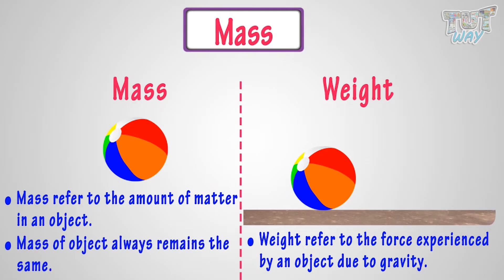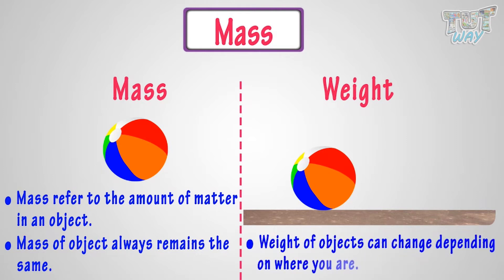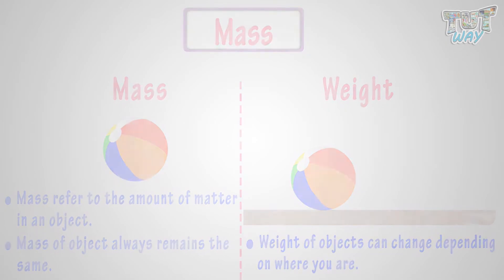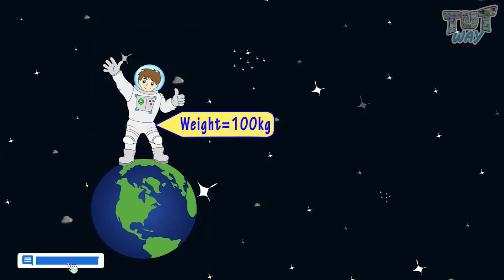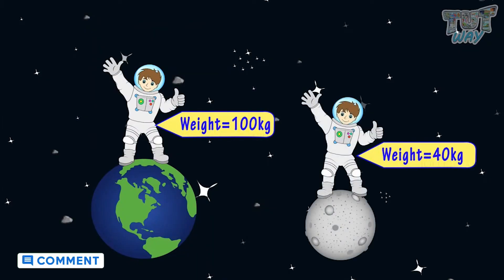Mass of objects always remains the same, but the weight of objects can change depending on where you are. Like for example, your weight on Earth will be different from your weight on the Moon. We will study more on the difference between mass and weight in science.